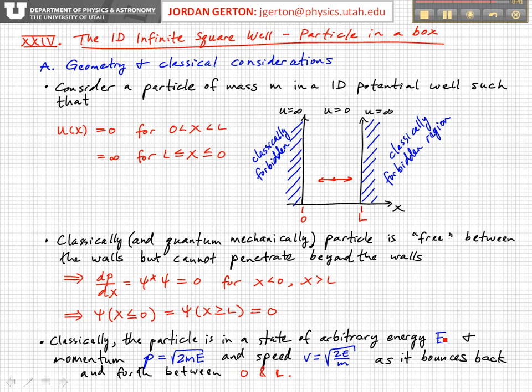If we consider the classical case, then the momentum equals the square root of 2mE, and the speed is the square root of 2E/m. So it bounces back and forth between zero and L in a state of arbitrary energy that depends on how much energy you give it initially. Once you give it that amount of energy, if you can neglect dissipation or other forces, it will bounce back and forth eternally with that same energy, momentum, and velocity. That's how the problem looks when you think about it classically.